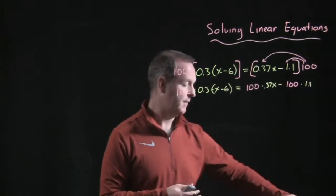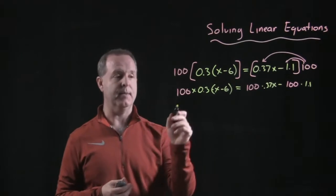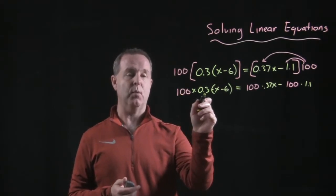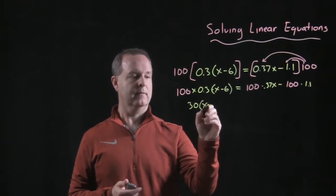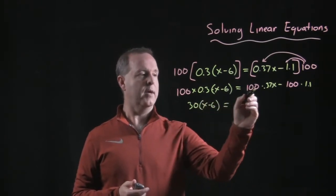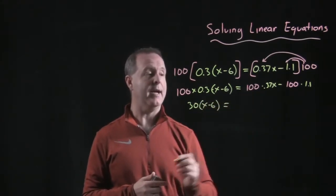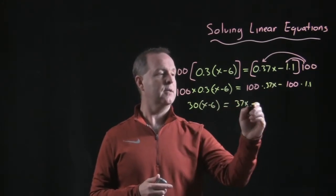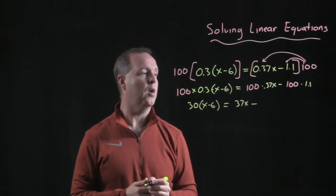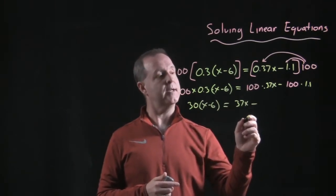Doing that, I think I had enough terms that all my decimals disappear. So 100 times 0.3 is 30, 100 times 0.37x is 37x minus 100 times 1.1, that gives me 110.